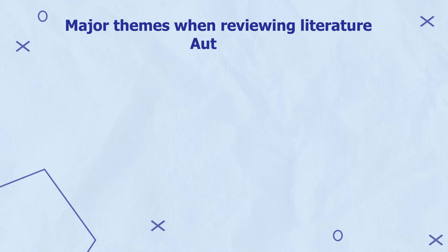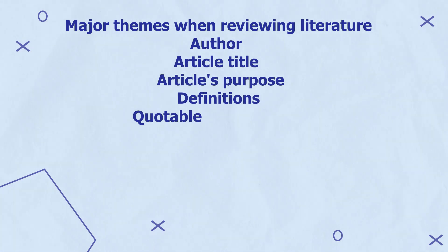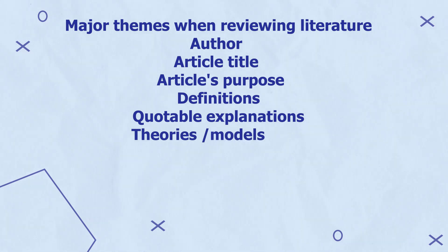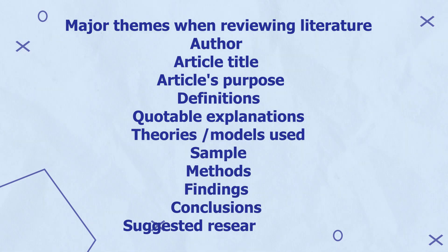The next step is to read through all retrieved scholarly articles and identify the main themes. Major sections to consider when reviewing literature include: the author, article title, article purpose, definitions, quotable explanations, theories or models used, sample, methods, findings, conclusions, and suggested research gaps.